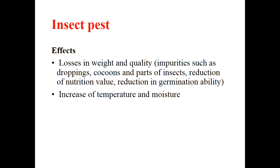There are impurities such as insect droppings, like frass, cocoons, and body parts of insects, causing reduction of nutritional value and reduction in germination ability. Insect activity also increases temperature due to mass production and increases moisture due to droppings.